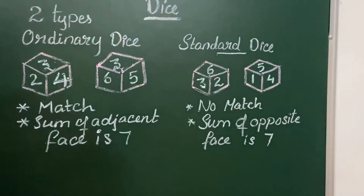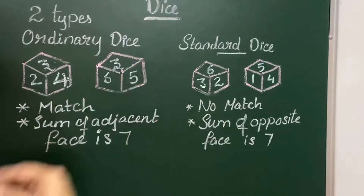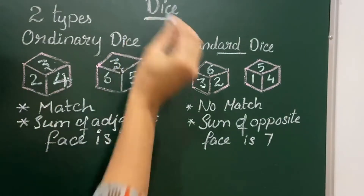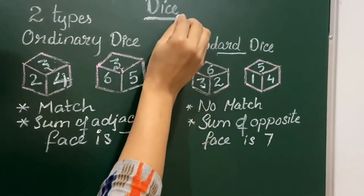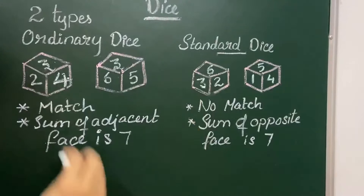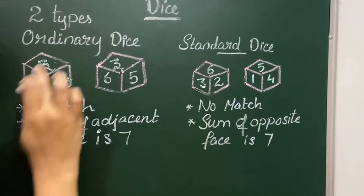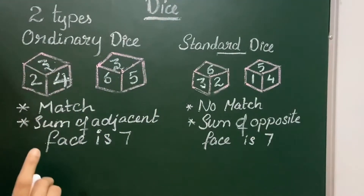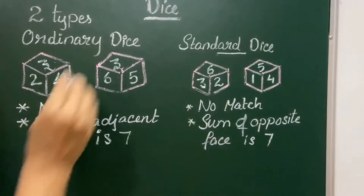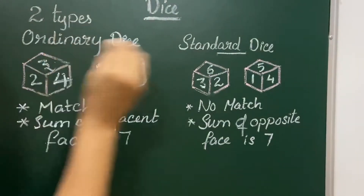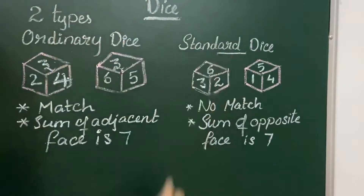Hi everyone. Today we are going to see about dice. Dice is nothing but a cube with different numbers on all its faces. The numbers are usually from 1 to 6, and dice are of two types: ordinary dice and standard dice.